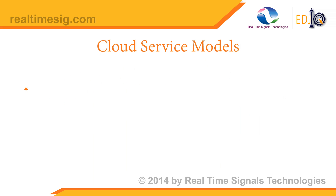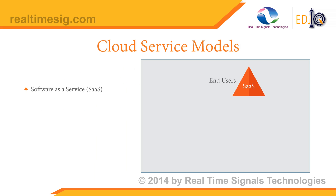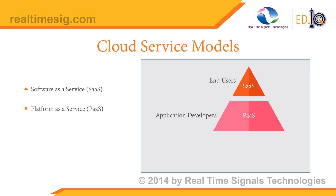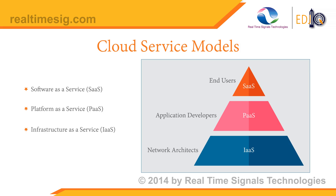Cloud service models: the first one is Software as a Service, where the software is presented to the end user on demand, usually on a browser, and it targets end users. The second model is Platform as a Service, where it provides a development platform with a set of services on cloud, and it targets developers. The third model is Infrastructure as a Service, where it virtualizes computing power, storage, and network connectivity, and it targets developers and IT ops.